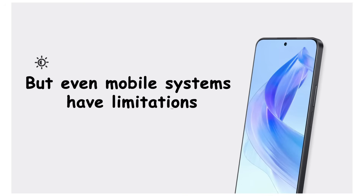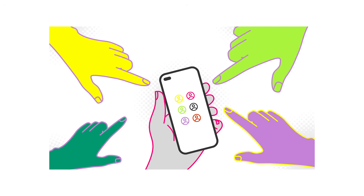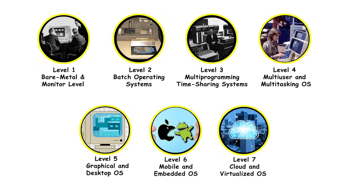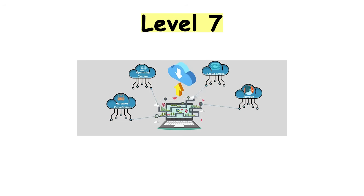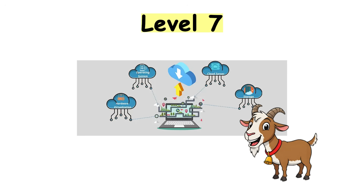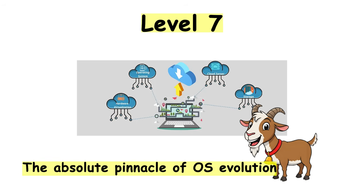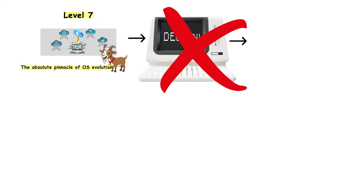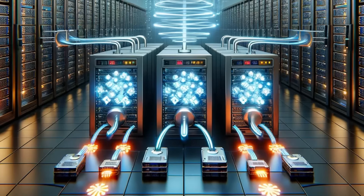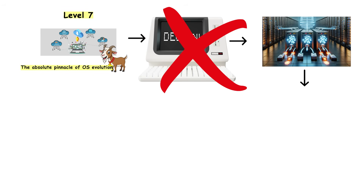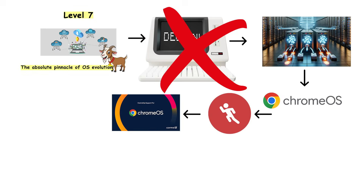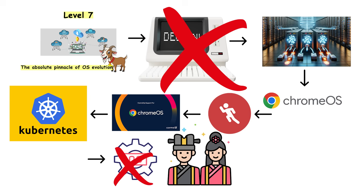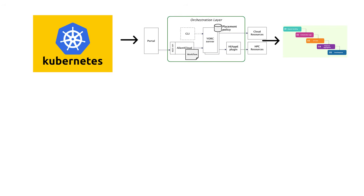But even mobile systems have limitations — they're designed for single users on single devices. The final level breaks even that constraint. Level 7: cloud and virtualized operating systems — GOAT status, the absolute pinnacle of OS evolution. This level isn't about one computer anymore; it's about operating systems that span thousands of machines across multiple data centers. Chrome OS barely runs anything locally — it's just a browser that connects to cloud services. Kubernetes isn't even an OS in the traditional sense; it's an orchestration layer that manages containerized applications across entire server clusters.